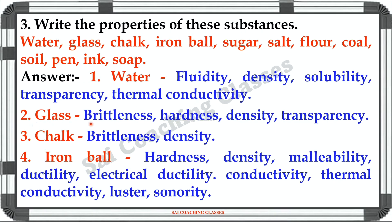Glass ki properties: Brittleness, Hardness, Density, Transparency. Coal: Brittleness, Density. Iron ball: Hardness, Density, Malleability, Ductility, Electrical Conductivity, Thermal conductivity, Lustre, Sonority.